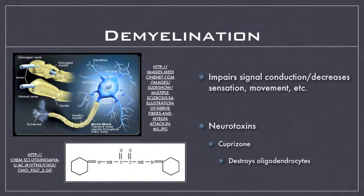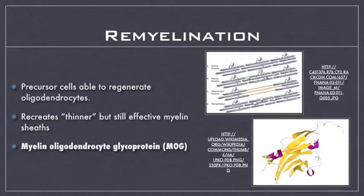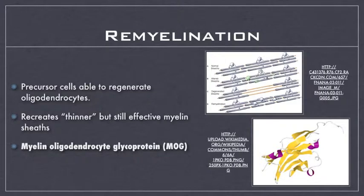When demyelination occurs, our body responds by triggering remyelination. This is exactly what the name implies. The precursor cells to oligodendrocytes increase their ability to regenerate oligodendrocytes, which in turn regenerate previously damaged myelin sheets on the axon. It should be noted that these myelin sheets are slightly thinner than the original sheets, but are still just as functional.